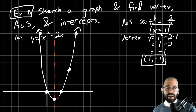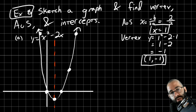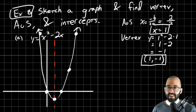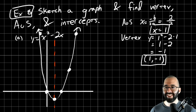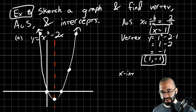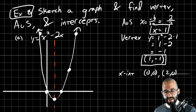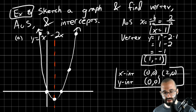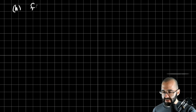Graphing this way, it should look like this — and this also tells us the intercepts without needing the quadratic formula since we've already graphed them. Our x-intercepts — where we cross the x-axis — are at (0, 0) and (2, 0). The y-intercept, where we cross the y-axis, is also (0, 0). We got kind of lucky on this one.